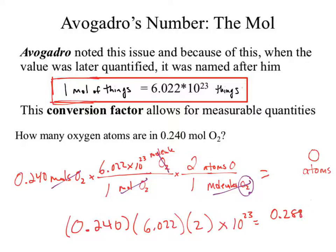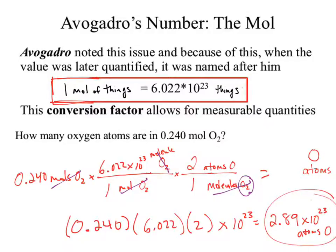The answer is 2.89 times 10 to the 23rd. Would this answer be correct? We still need our unit — we have our atoms of oxygen. So the final answer is 2.89 times 10 to the 23rd atoms of oxygen.